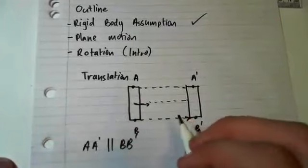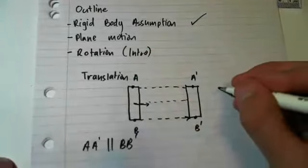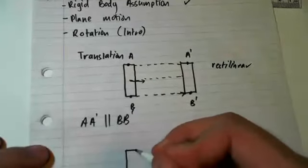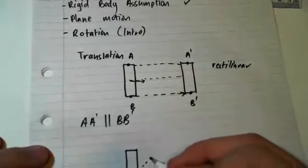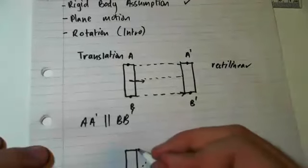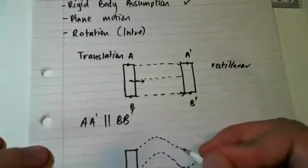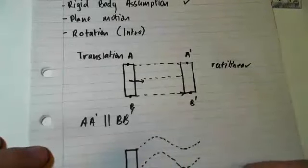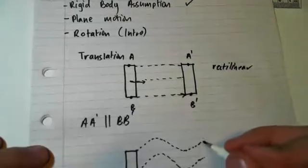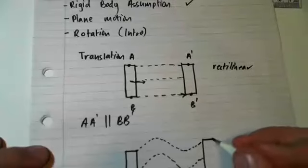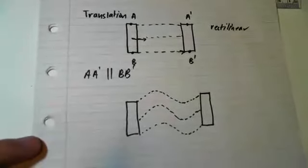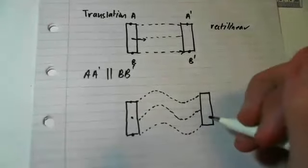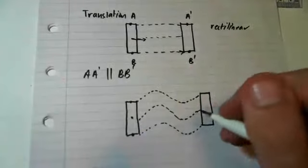We can have rectilinear, which is the example you just saw here, or you can have curvilinear. So, that's the example just seen. Curvilinear is like so. Where the path followed is curved. The body ends up parallel to where it was before. However, the lines that have travelled, the path that it's taken is curved, as opposed to being straight.